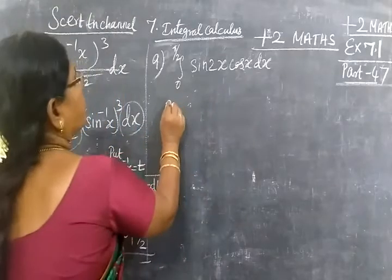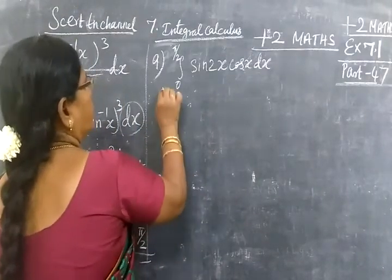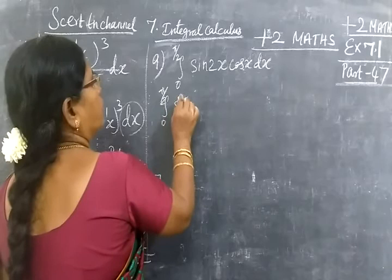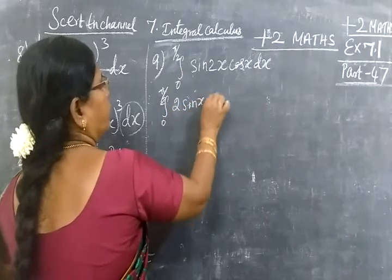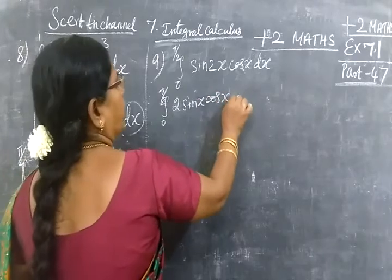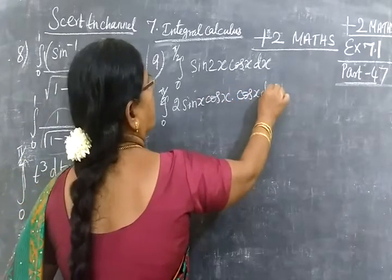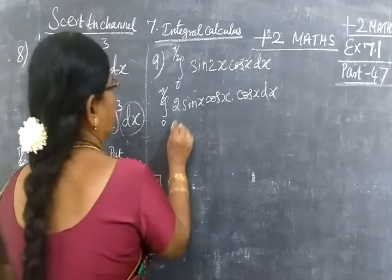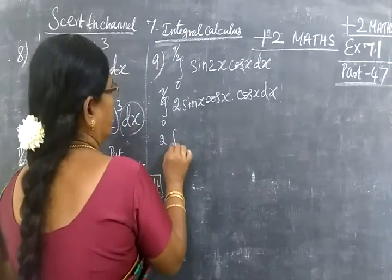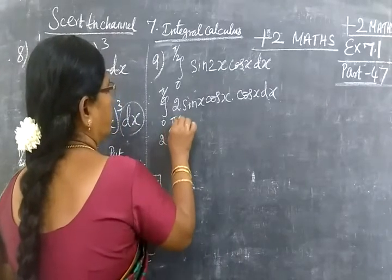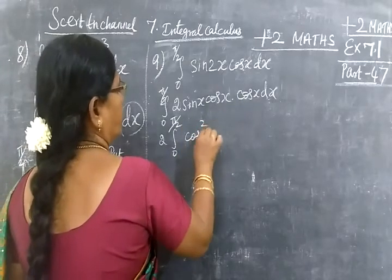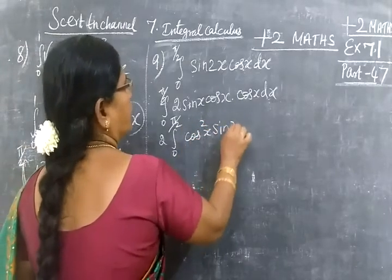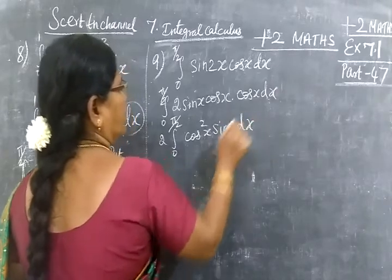Now for the second one. Integrate 0 to π/2 of sin(2x)cos(x) dx. Sin(2x) equals 2sin(x)cos(x). So the integral becomes 0 to π/2 of 2sin(x)cos²(x) dx.